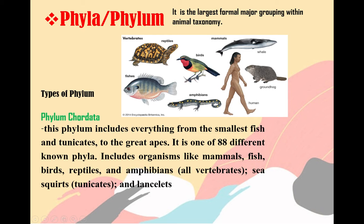There are three types of phylum. The first one is Phylum Chordata. This phylum includes everything from the smallest fish and tunicates to the great apes. It is one of 88 different known phyla. It includes organisms like mammals, fish, birds, reptiles, and amphibians. As seen in the picture above, these are the animals who have vertebrates. For example, in reptiles we have turtle; fishes; then birds; amphibians; and then we have mammals — examples are whale, groundhog, and human.